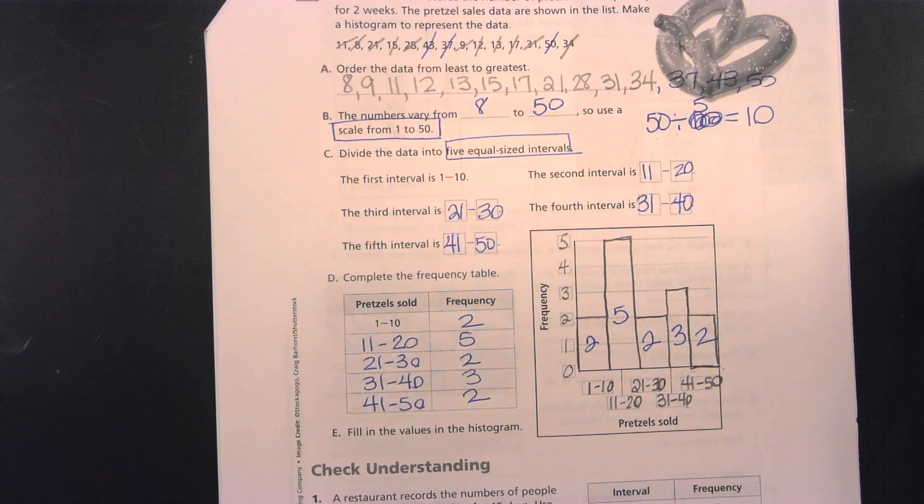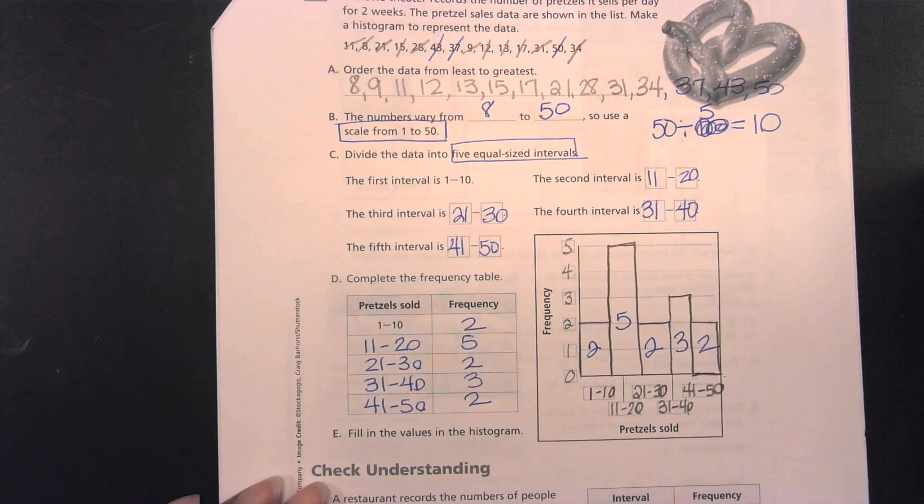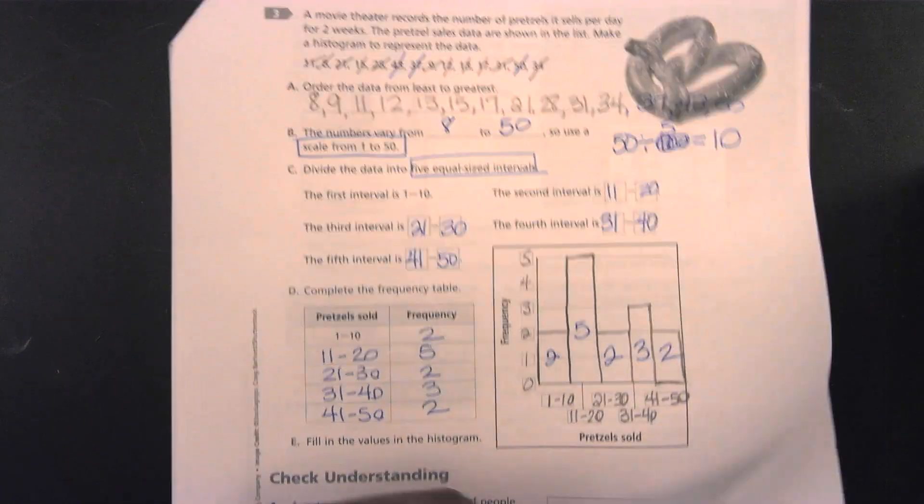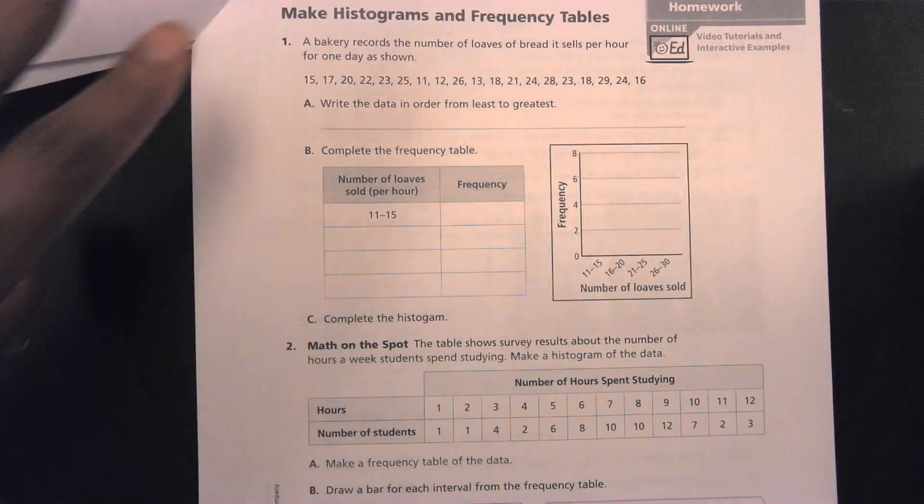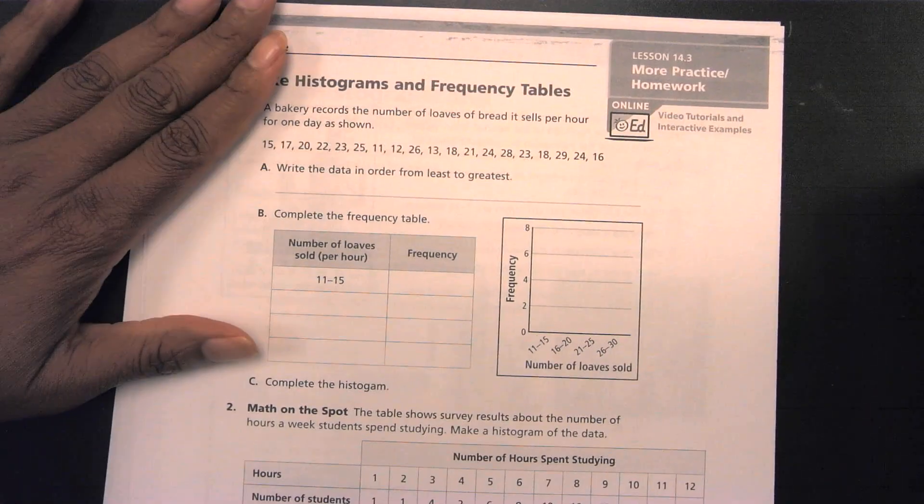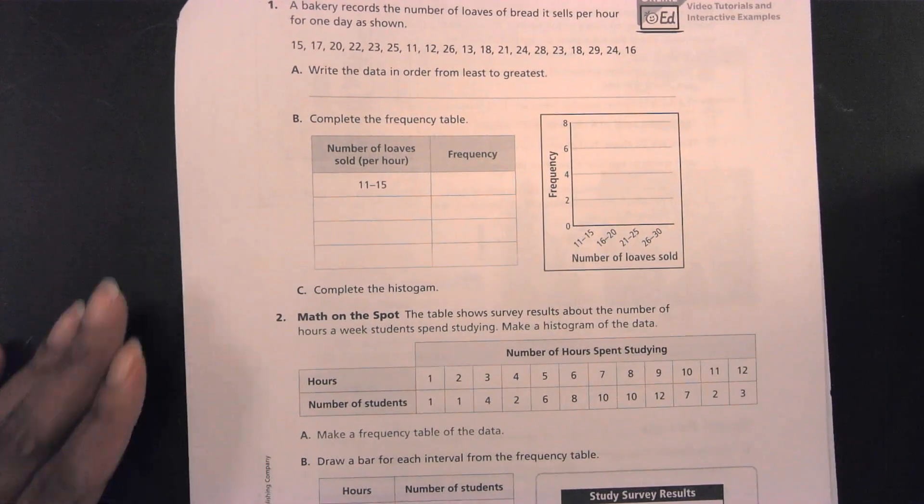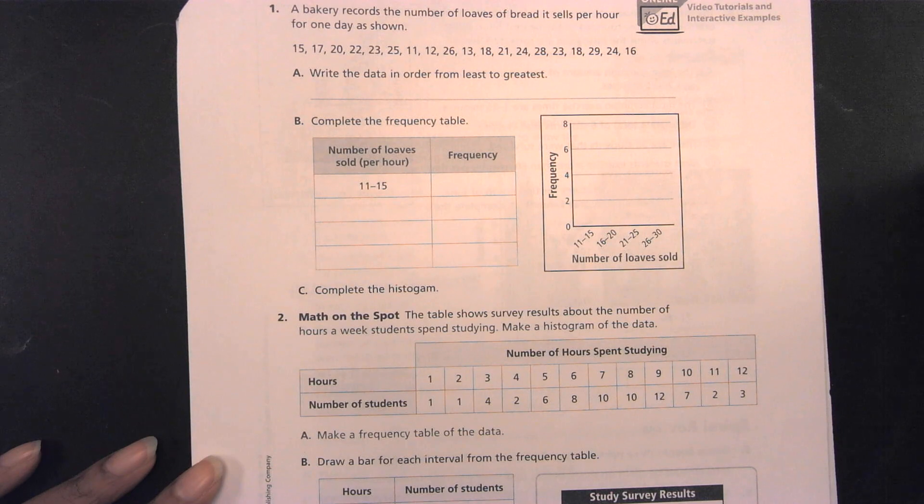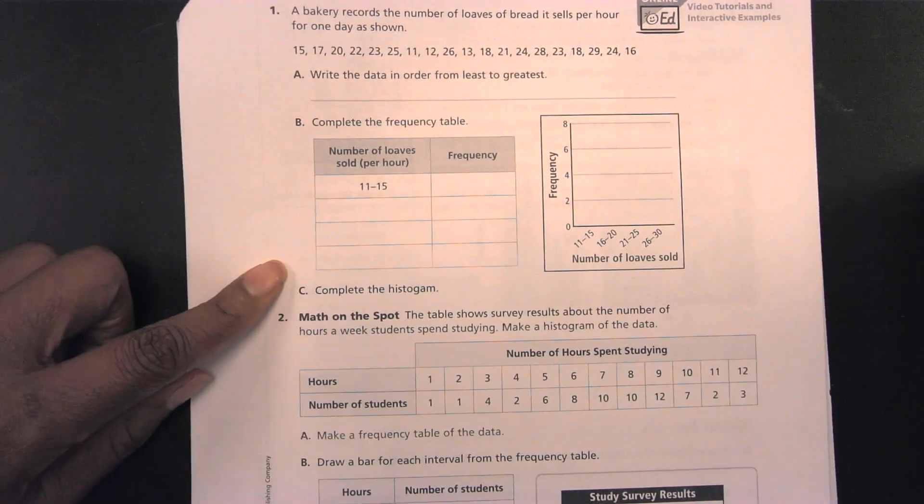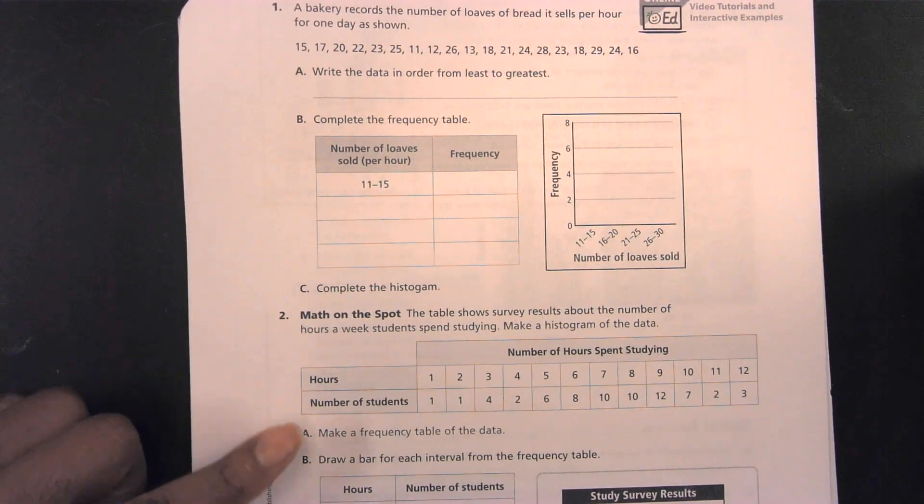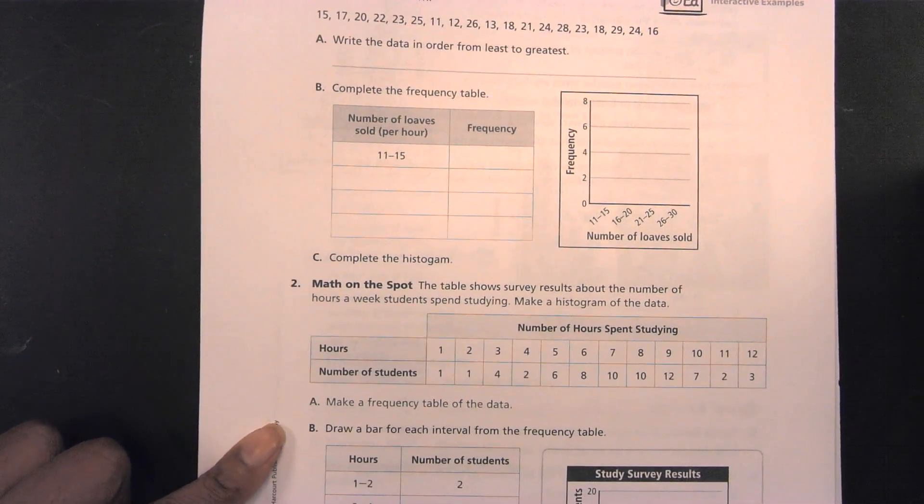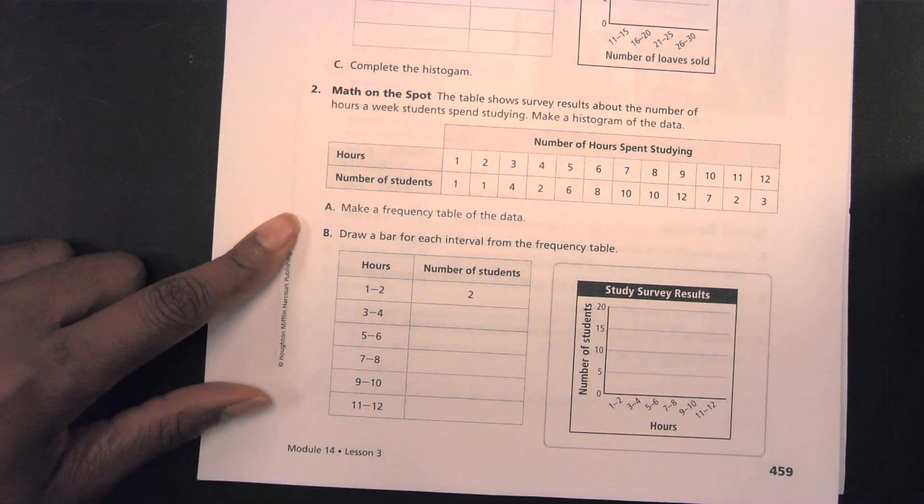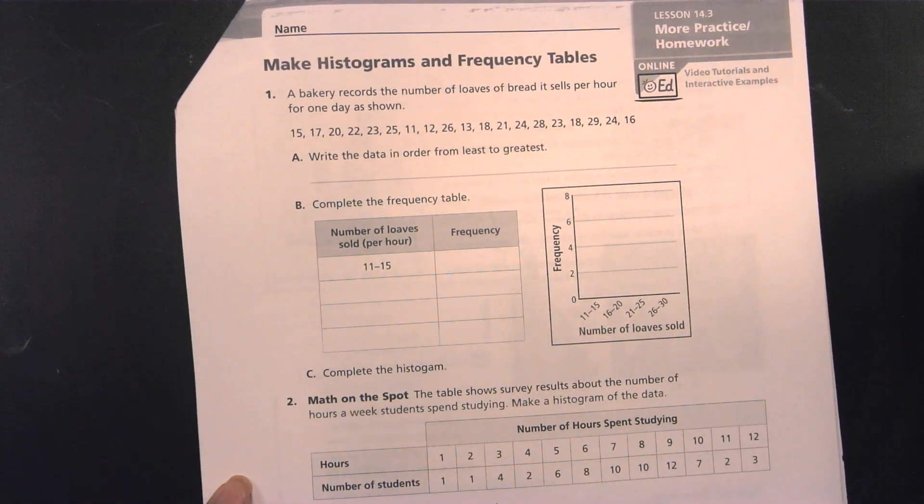Now, you guys have some practice. Your practice that I would like for you all to do is going to be on page 459. I would like for you guys to do the whole entire page of 459. We will go over this on tomorrow. So, 1ABC, number 2, 2A2B, we will talk about this on tomorrow. Again, the whole entire page, page 459.